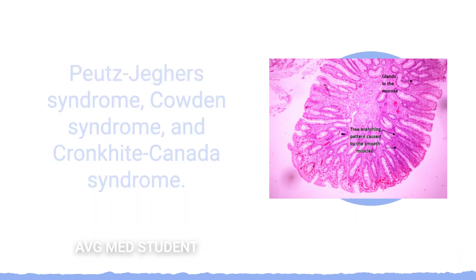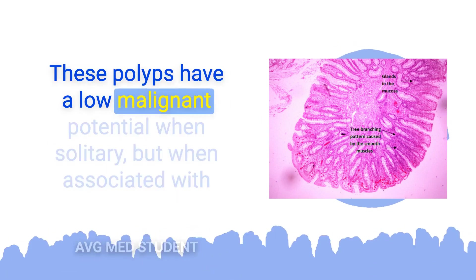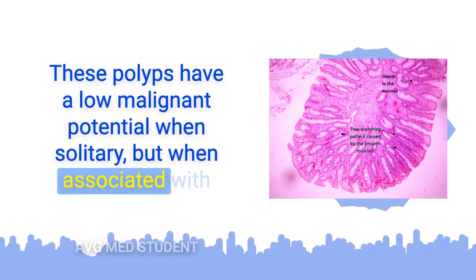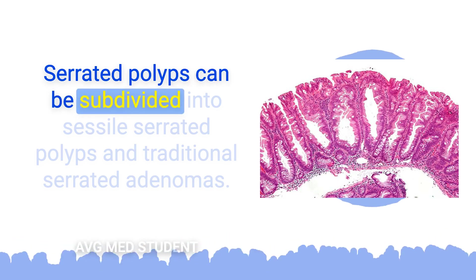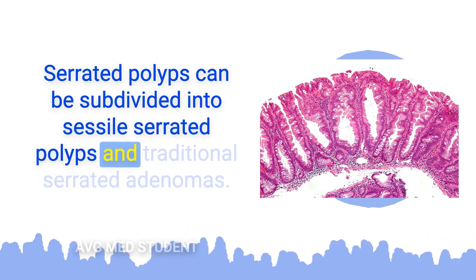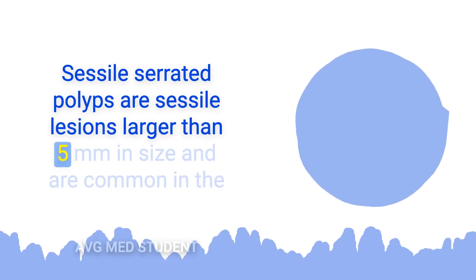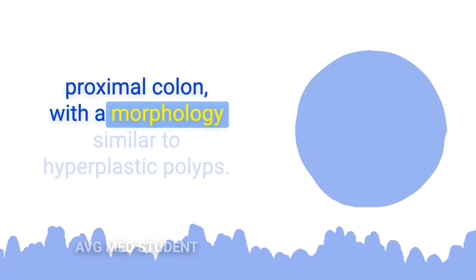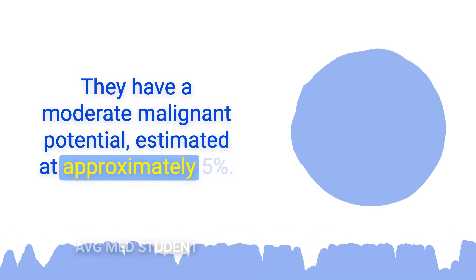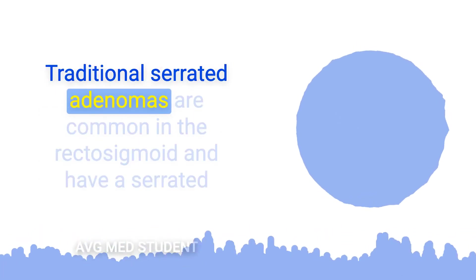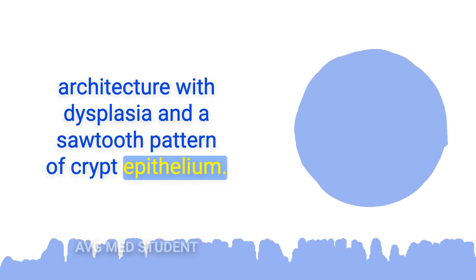Hamartomatous polyps are associated with several syndromes, including Juvenile Polyposis Syndrome, Peutz-Jeghers Syndrome, Cowden Syndrome, and Cronkhite-Canada Syndrome. These polyps have a low malignant potential when solitary, but when associated with syndromes, there is an increased risk of colonic and extracolonic malignancies. Serrated polyps can be subdivided into sessile serrated polyps and traditional serrated adenomas. Sessile serrated polyps are sessile lesions larger than 5 mm, common in the proximal colon, with a morphology similar to hyperplastic polyps and a moderate malignant potential estimated at approximately 5%. Traditional serrated adenomas are common in the rectosigmoid and have a serrated architecture with dysplasia and a sawtooth pattern of crypt epithelium.